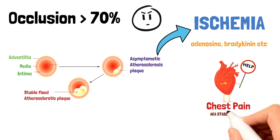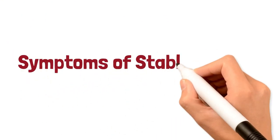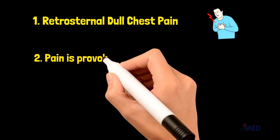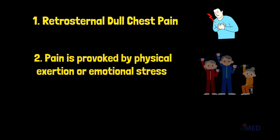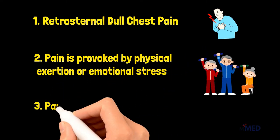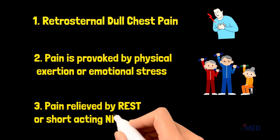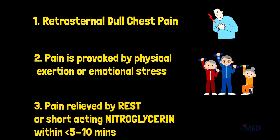The typical symptoms of stable angina are: number one, retrosternal blunt dull chest pain; number two, the pain is provoked by physical exertion or emotional stress; and number three, the pain is relieved by rest or short-acting nitroglycerin within less than five to ten minutes.